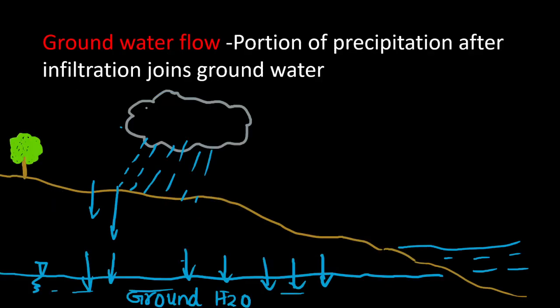The final type of runoff is groundwater flow, where precipitation after infiltration undergoes percolation — going deep into the ground — and joins the groundwater table. At suitable portions, this groundwater may also emerge and become part of the surface streams.